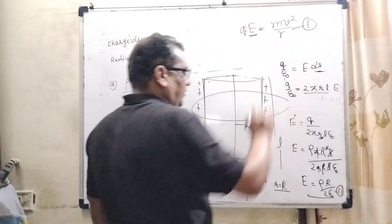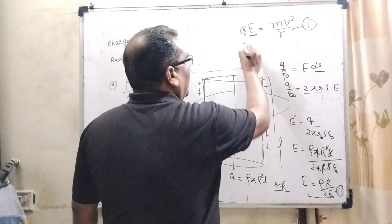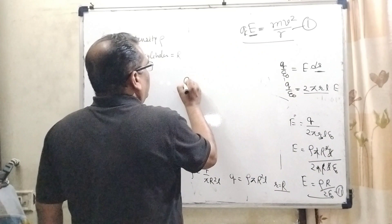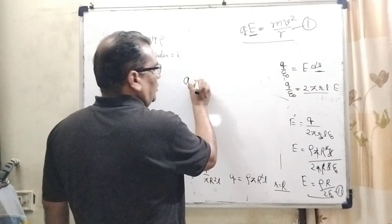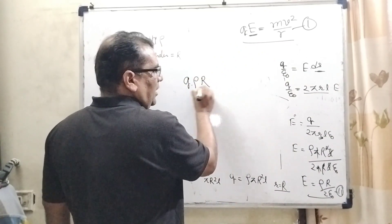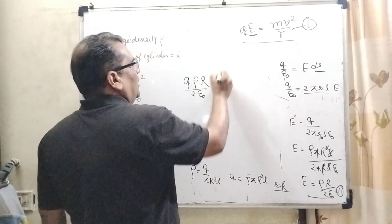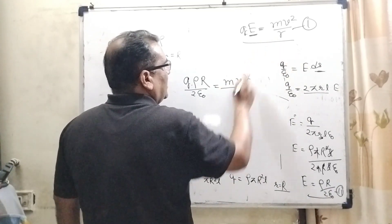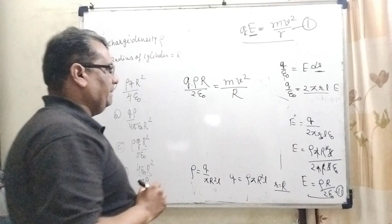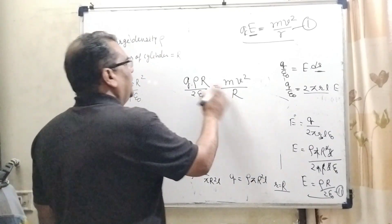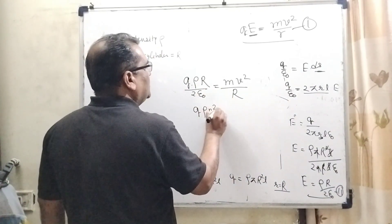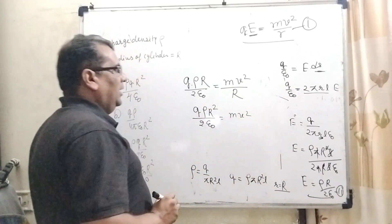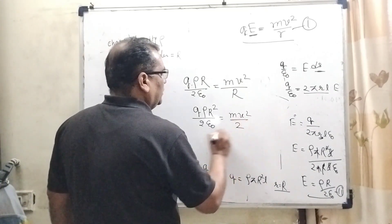Now substitute this value of E in equation number first. Q times the value of E is ρR/2ε₀ equals mv², and in the place of small r, we substitute capital R. So QρR²/2ε₀ = mv².